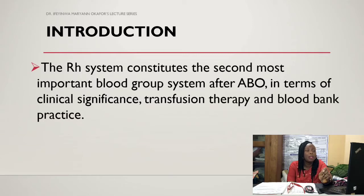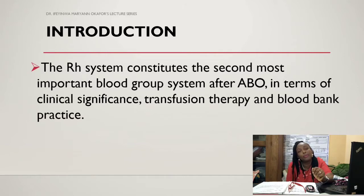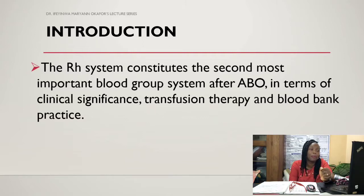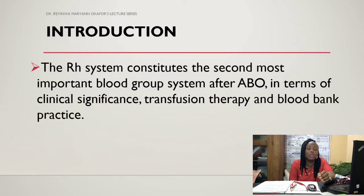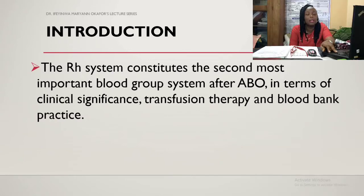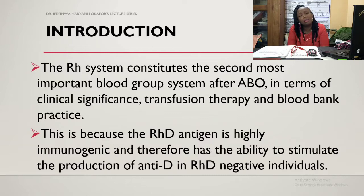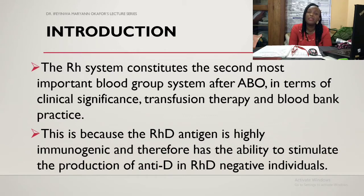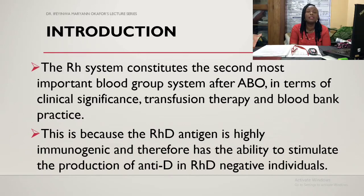Introduction. The RH system consists of the second most important blood group system, second only to ABO blood group system, which we have previously discussed. It is very important in terms of clinical significance, transfusion therapy, and blood bank practice. This is because the RHD antigen is highly antigenic and very immunogenic, and therefore has the ability to stimulate the production of anti-D in any RHD negative individual.